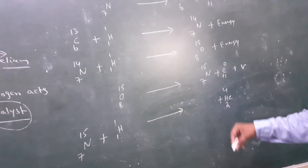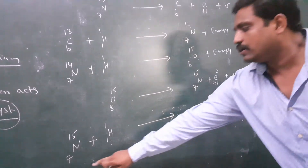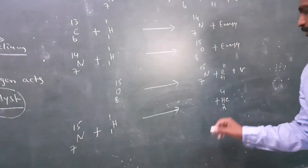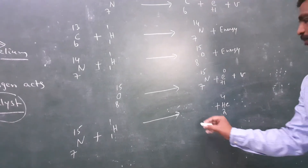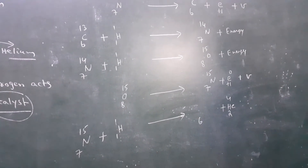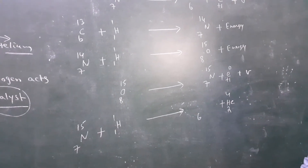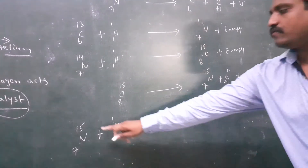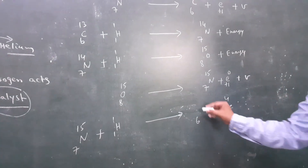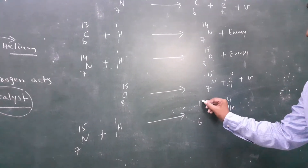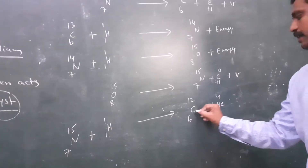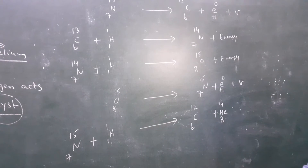Finally we write Helium-2-4. Here: 7 plus 1 equals 8, 8 minus 2 gives 6. Then 15 plus 1 equals 16, 16 minus 4 gives 12. So we write C-6-12 on the right side.